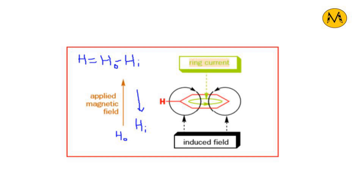The direction of the magnetic field inside the ring will be opposite to the direction of the magnetic field applied externally. Because of this, the net magnetic field will decrease. So the net magnetic field H equals H_out minus H_in, because the directions of the two fields are opposite.